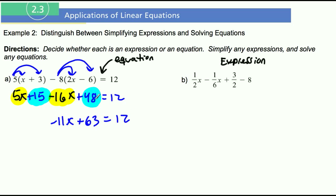All right, so now let's do two more steps here. I'm going to subtract 63 from both sides to get rid of that. So I'm going to subtract 63. Those will cross out. So I have negative 11x equals negative 51.